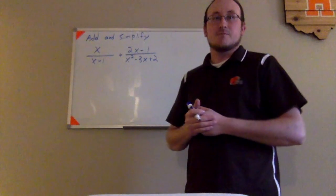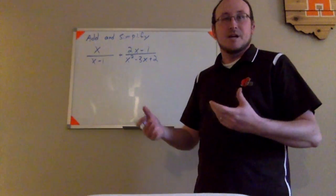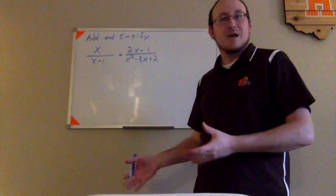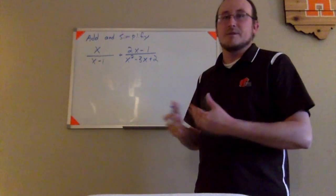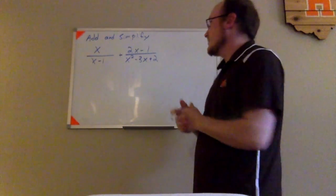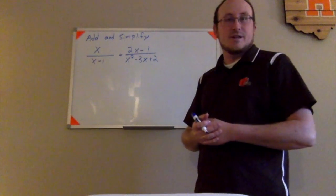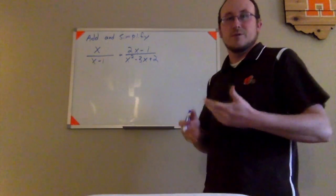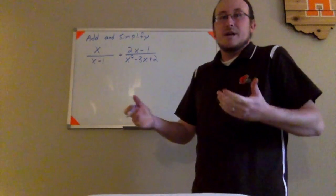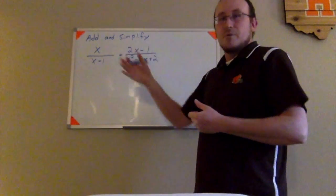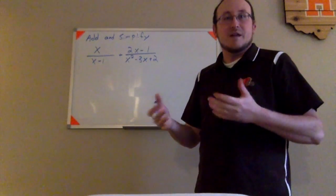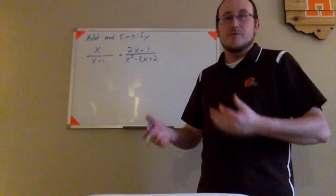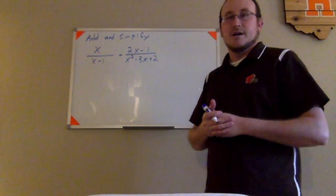Adding rational expressions is really just a complicated adding fractions problem. To be able to add fractions, you must have common denominators. The first thing I'm going to do is factor everything I can so I can see what factors I'm working with in my denominator. Then I'm going to have to multiply one or both of these fractions by something to make them have common denominators before I can go ahead and do the addition.